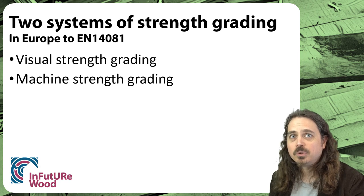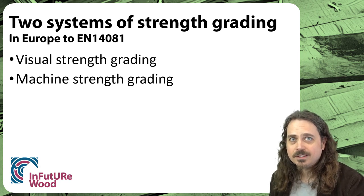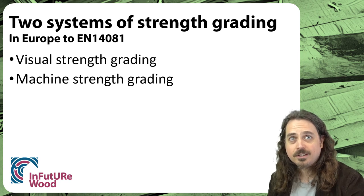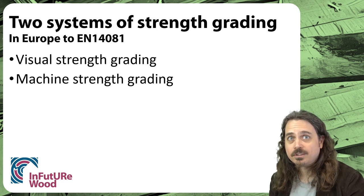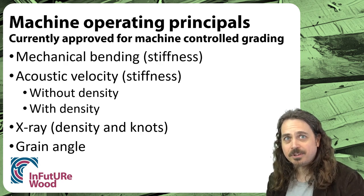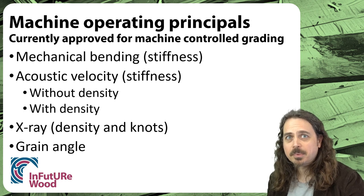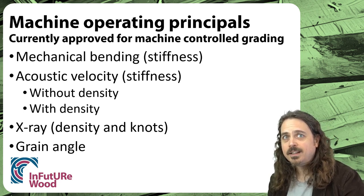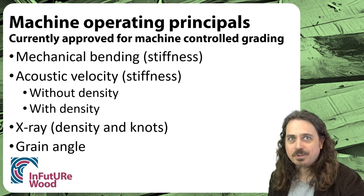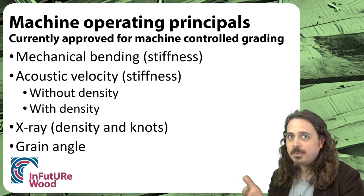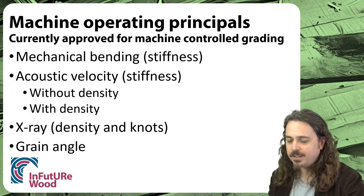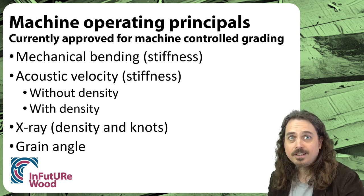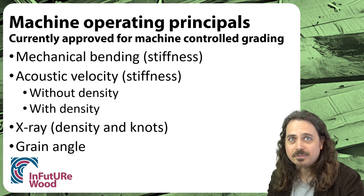Machine grading works by measuring one or more indicating properties — something that the machine measures that's indicative of strength, stiffness and density of the timber — that allows you to grade it to a strength class. There are a number of different machine types and operating principles with pros and cons for potential to grade secondary timber. Those indicating properties are based on one or more of the following: something to do with stiffness, something to do with density, something to do with knots, or something to do with slope of grain.